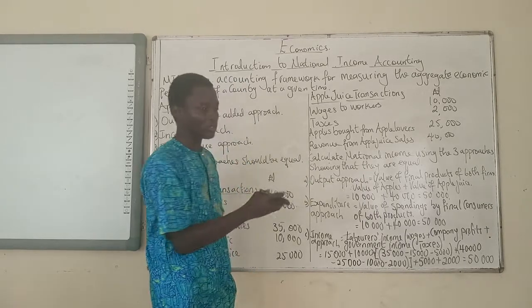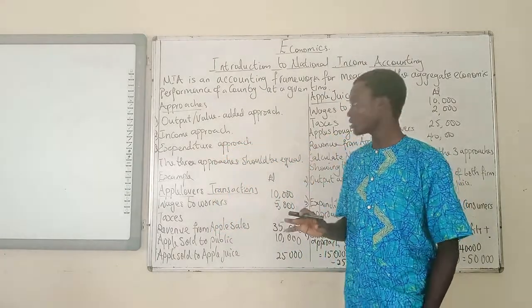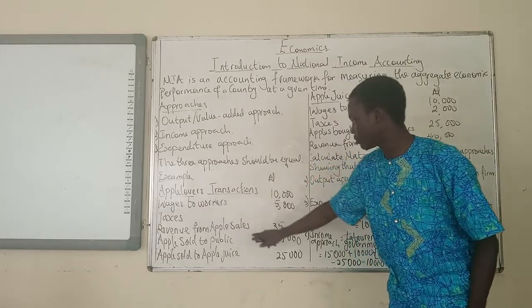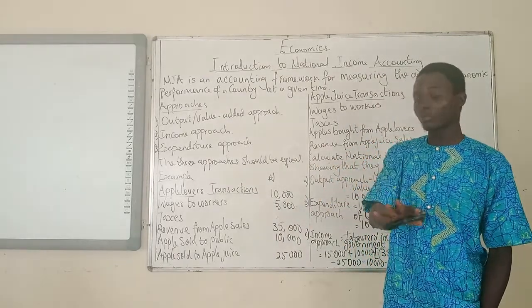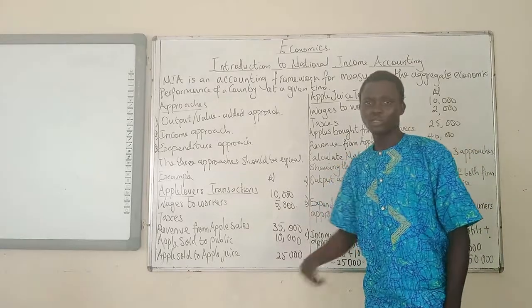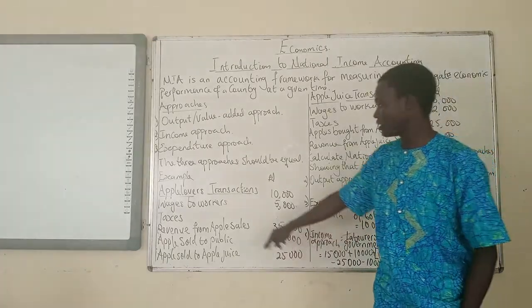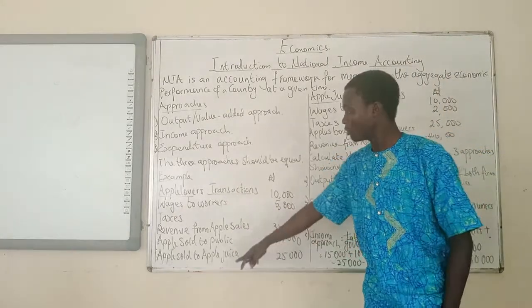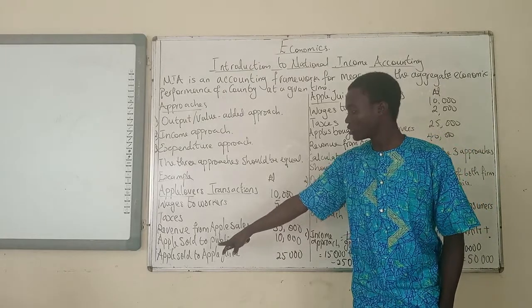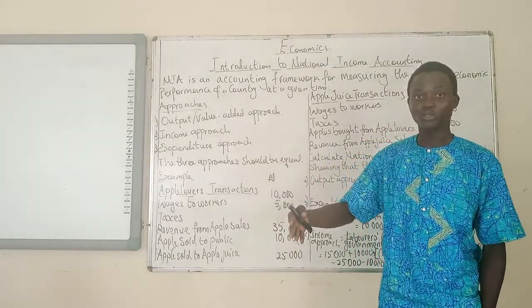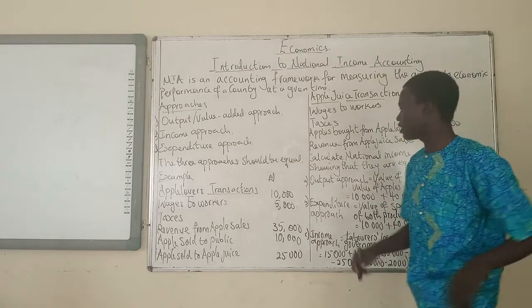Now first, looking at the output approach — we are talking about the final output of these firms. Wages paid is not output. Revenue from apple sales: we have apples sold to the public, which represents apples directly consumed by the public. Then we also have apples sold to Apple Juice. Which one should be recorded as a final product? The answer is apples sold to the public, because apples sold to Apple Juice represent an intermediate product. Apple Juice is another firm that uses apples bought from Apple Lovers to produce apple juice. So we do not include this — we include only the apples sold to the public, which is 10,000 Naira.